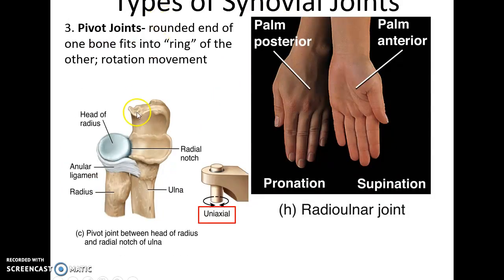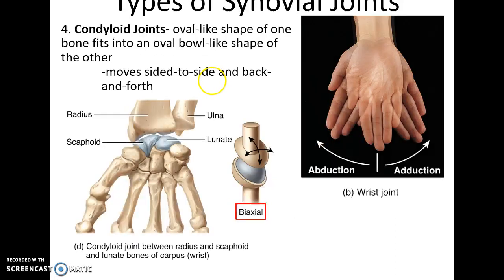The pivot joint has a rounded bone-like structure fitting into a ring next to another bone, allowing for rotational movement — such as between the head of the radius and the radial notch in the ulna, allowing us to supinate and pronate by pivoting around the radius. Condyloid joints have a smooth, somewhat rounded bone fitting into a depression or bowl-like shape of another bone. These are biaxial, allowing for two kinds of movement — side-to-side and back-and-forth.